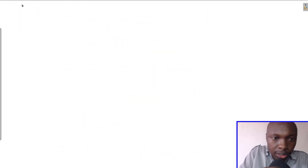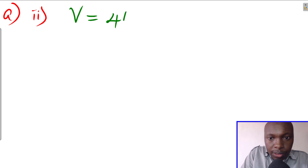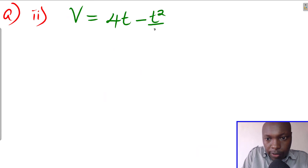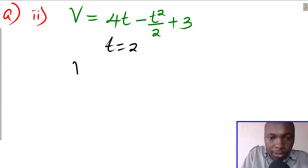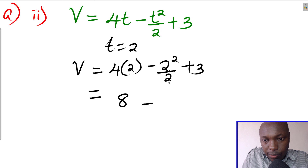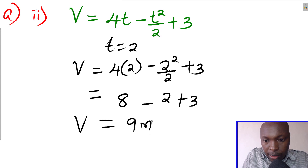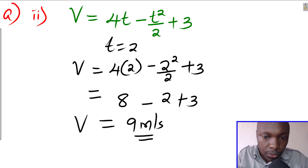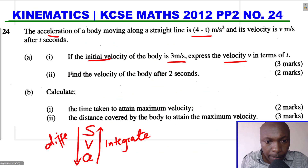For part a2, find the velocity after 2 seconds. We substitute t = 2 into v = 4t minus t²/2 plus 3. That gives 4(2) minus (2²)/2 plus 3, which equals 8 minus 2 plus 3, giving a velocity of 9 meters per second.